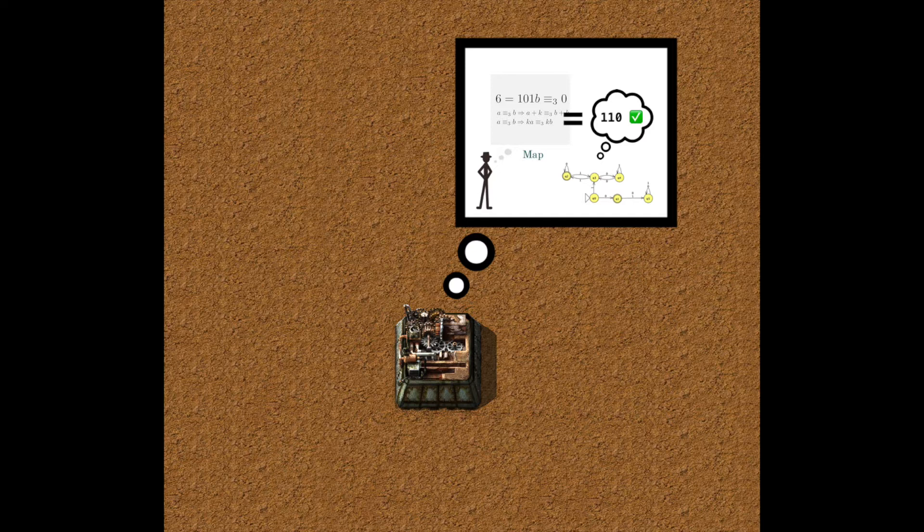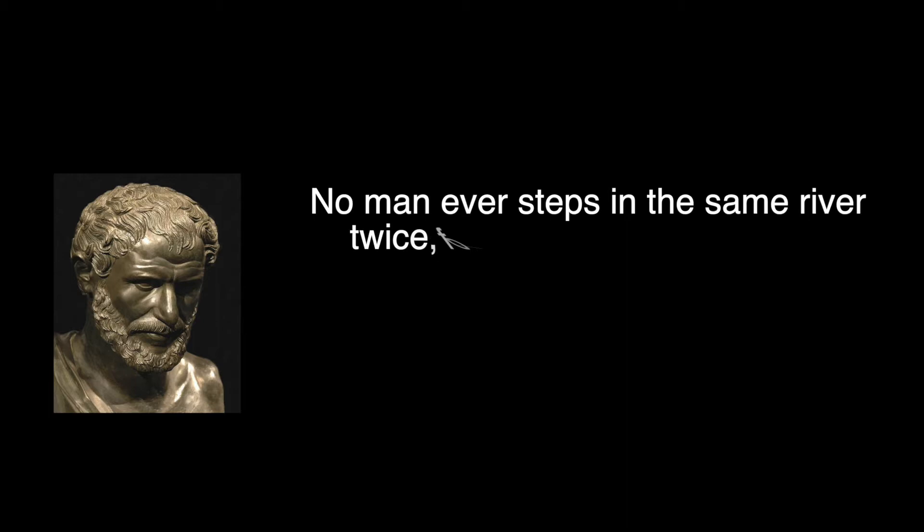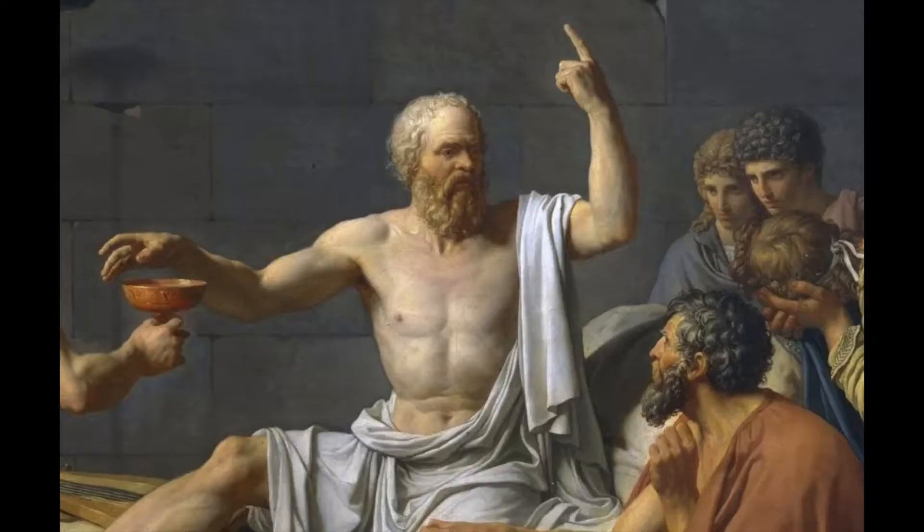But what does it mean for two things to be equal? Chapter 5: Equality. This question is so loaded that Heraclitus answers it with a simple nothing. No man ever steps in the same river twice, for it's not the same river, and he's not the same man. Embrace chaos, embrace demons. I know that I know nothing — please demon, leave me alone.